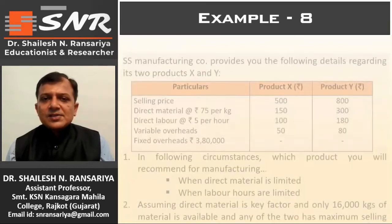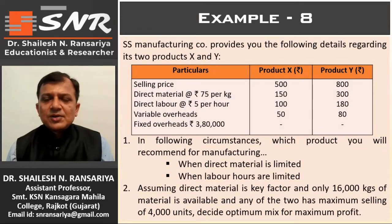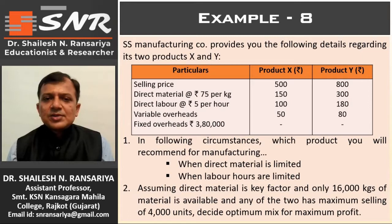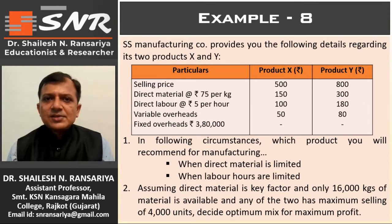Example number 8: SS Manufacturing Company provides the following details regarding its two products X and Y. Selling price: Product X rupees 500, Product Y rupees 800. Direct material at rupees 75 per kilogram: 150 and 300. Direct labor at rupees 5 per hour: 100 and 180. Variable overheads: 50 and 80. Fixed overheads total: rupees 3 lakhs 80 thousand.